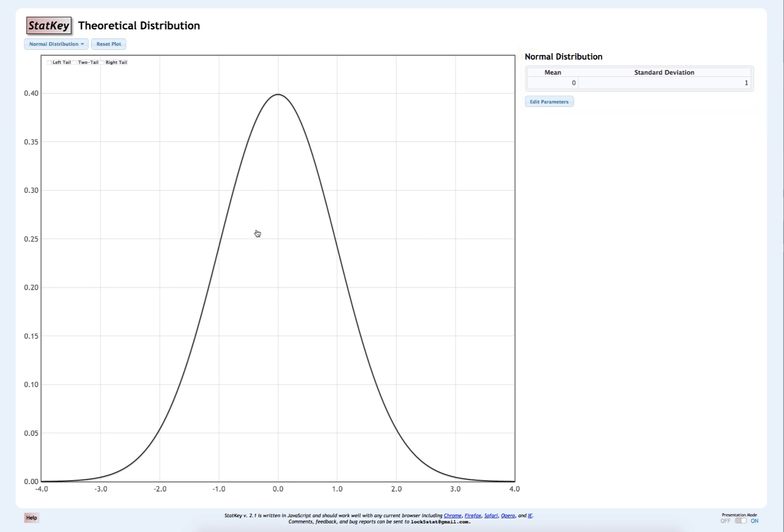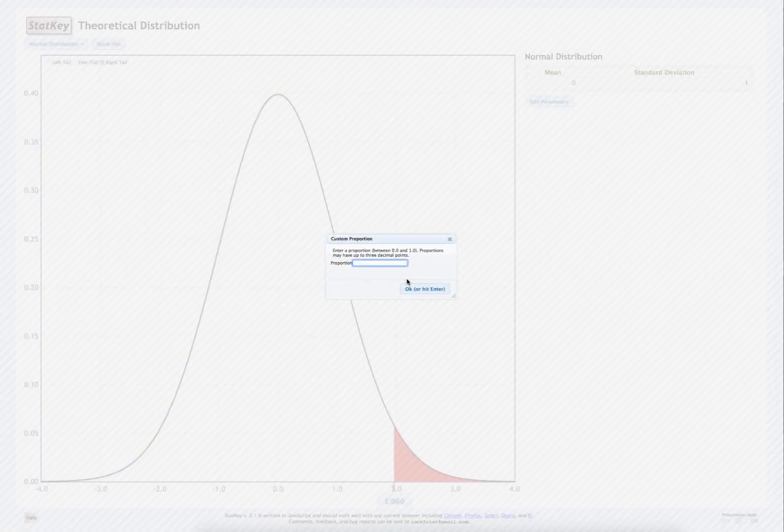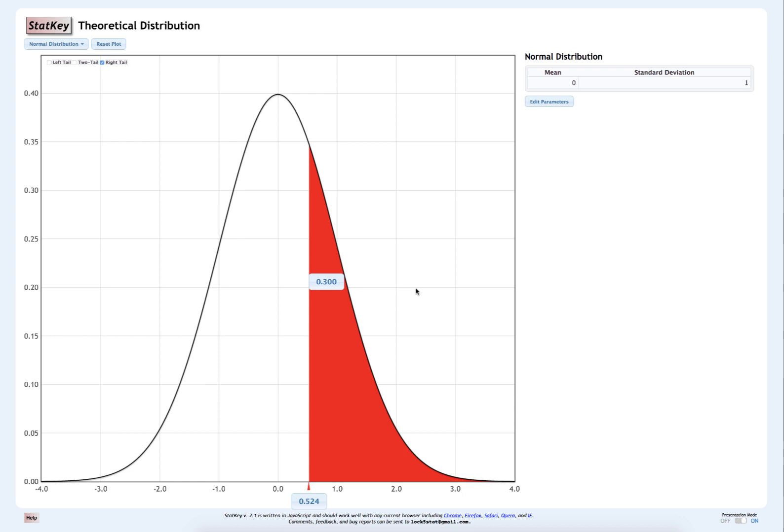I want to find the Z score that separates the top 30%. So in the right tail, I'm going to put 30% or 0.30. The Z score that separates the top 30% from the bottom 70% is 0.524.